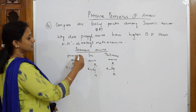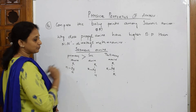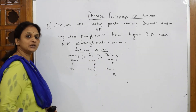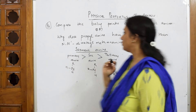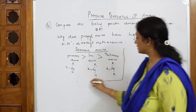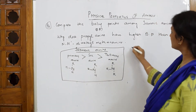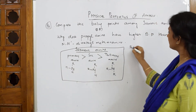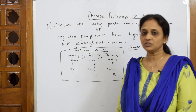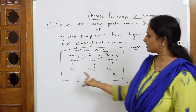Now they said compare the boiling points. Most importantly: primary amines have more boiling point compared to secondary, and secondary amines have more boiling point compared to tertiary. What is the reason? Boiling point depends upon hydrogen bonding.